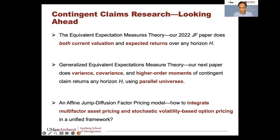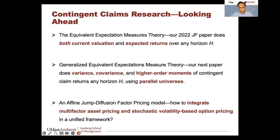One model I'm quite excited about is what we call the affine jump diffusion factor pricing model. This integrates two areas of finance: multi-factor asset pricing models originating from multi-beta CAPM, arbitrage pricing theory, and Fama-French — which use constant volatilities and constant correlations — and option pricing where stochastic volatilities and jumps are central. These two areas kind of live in different worlds, so we have a model that integrates the two.